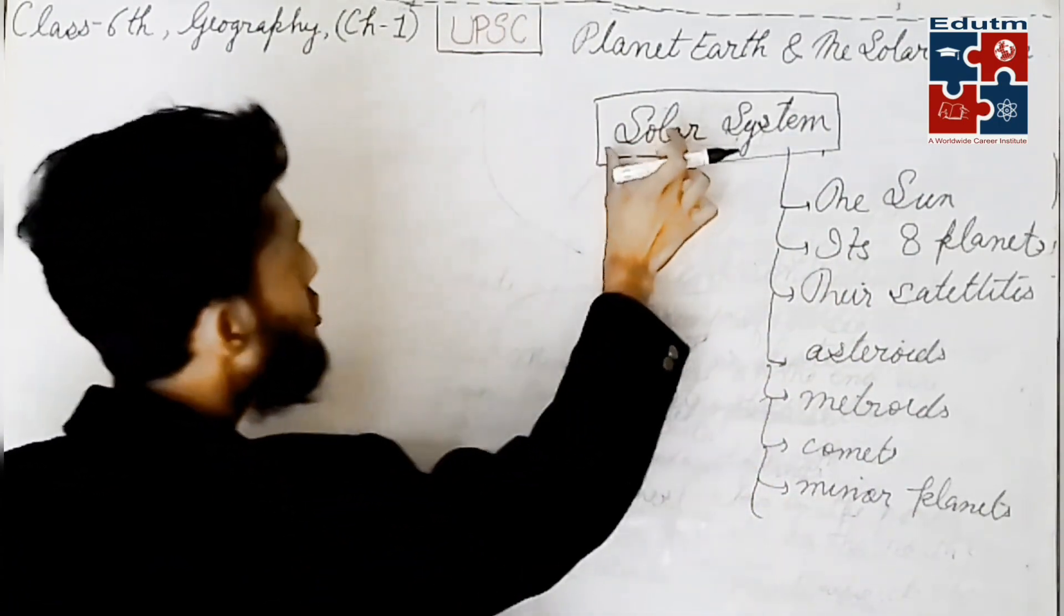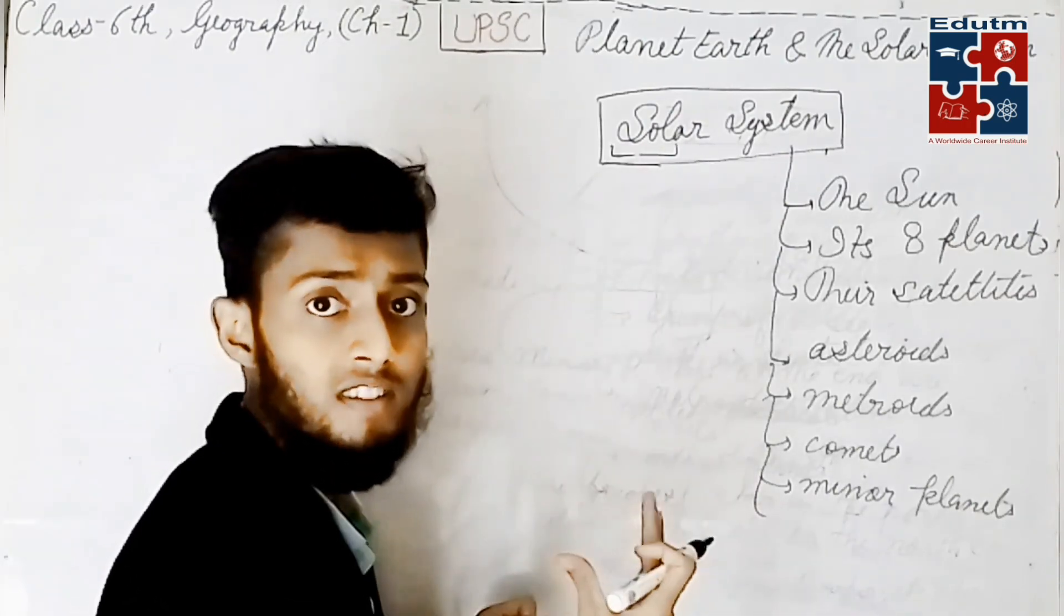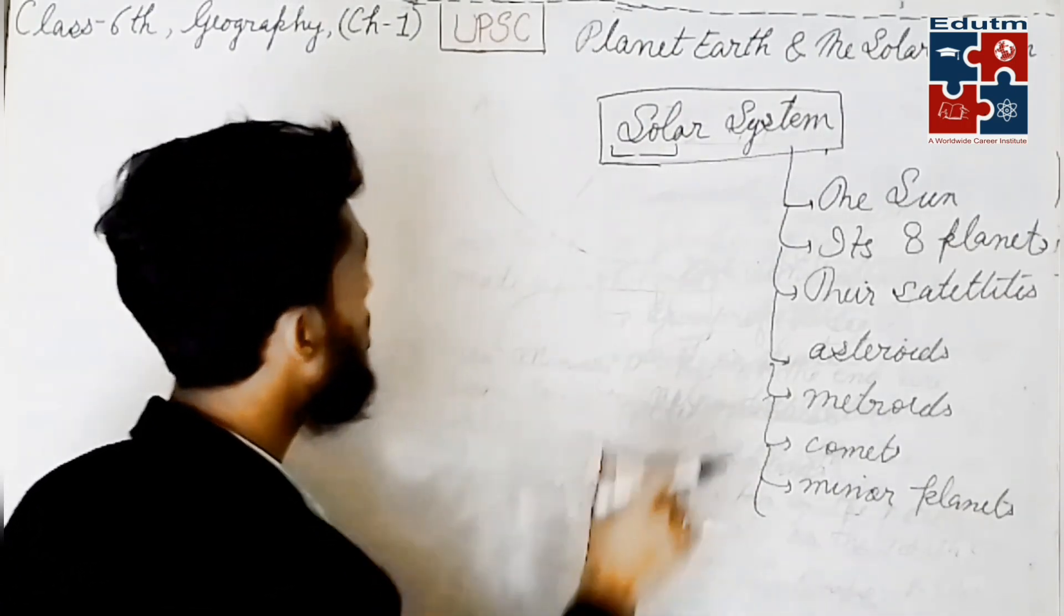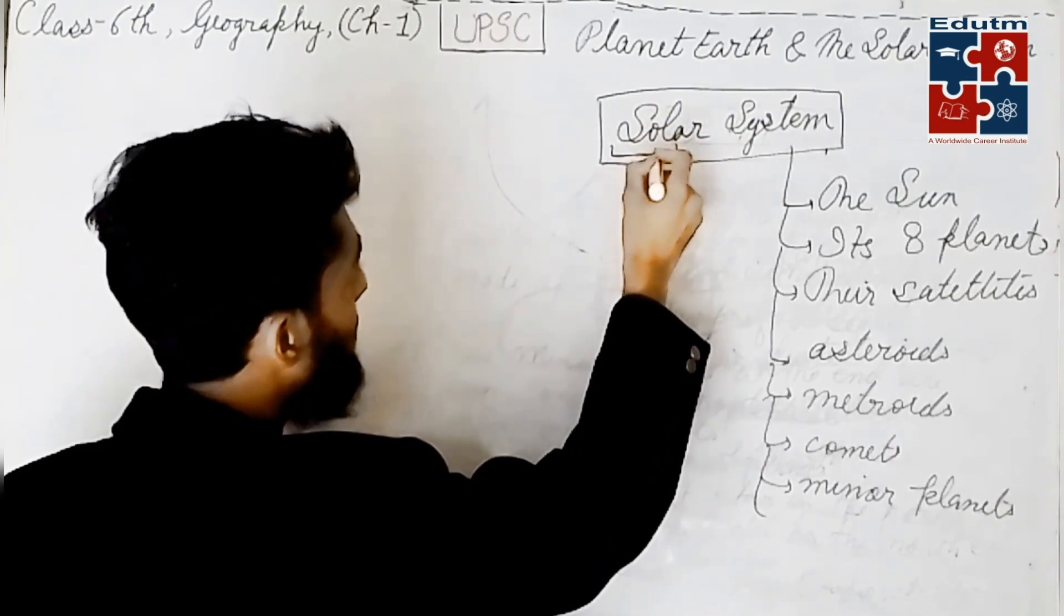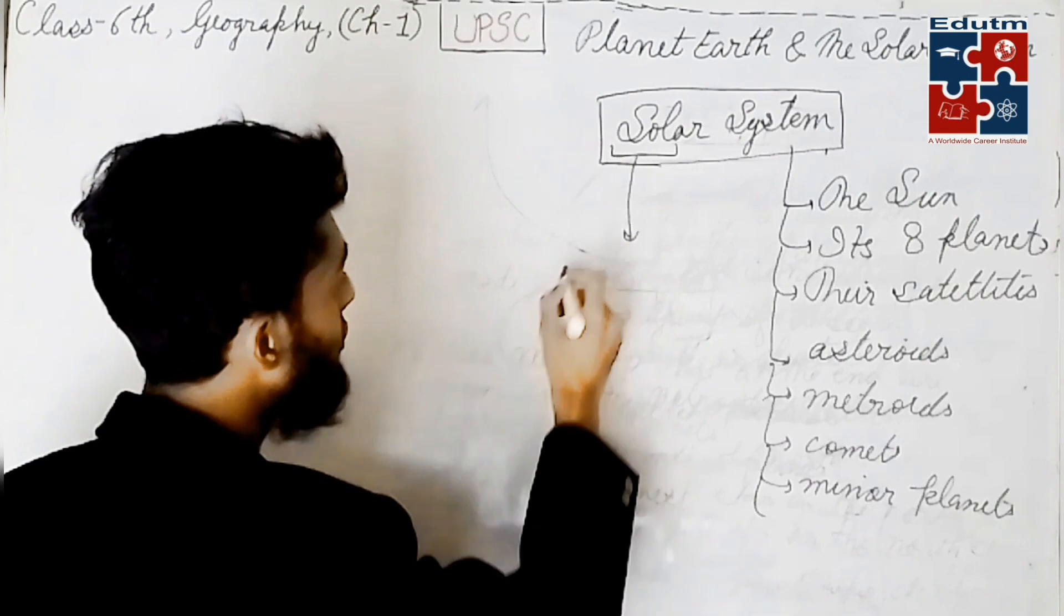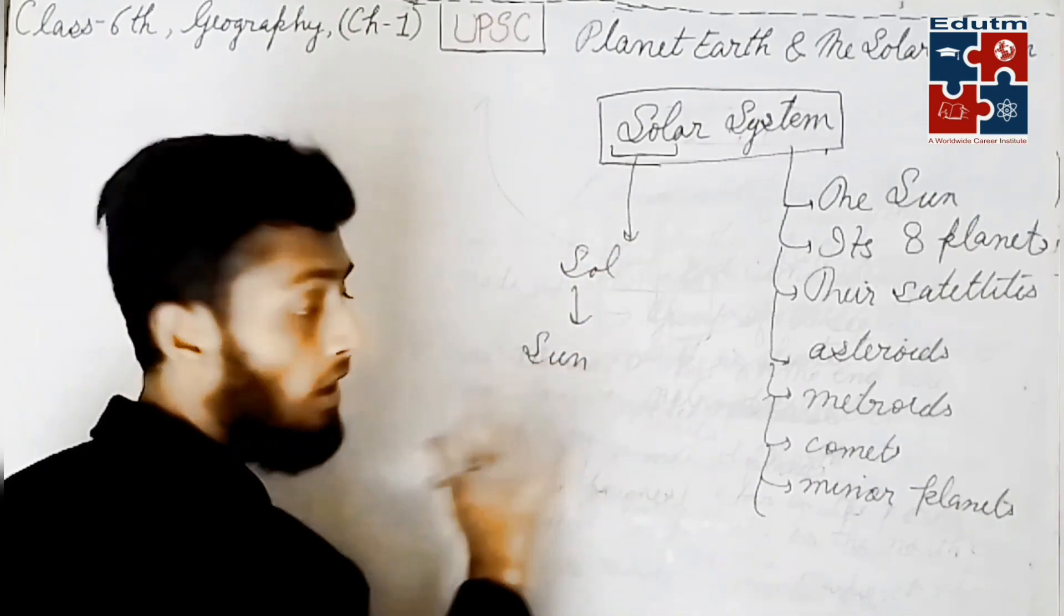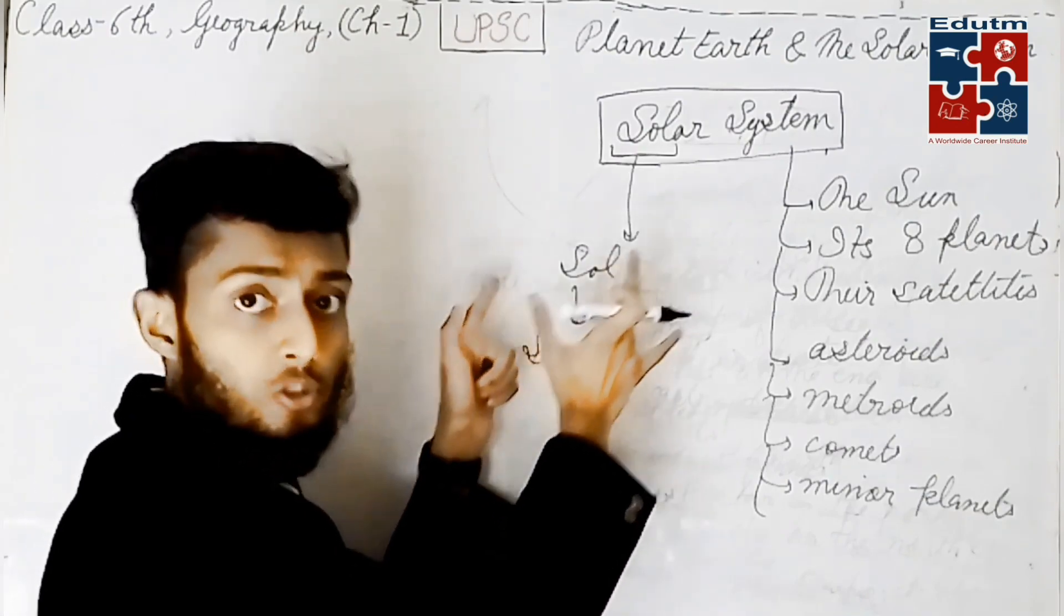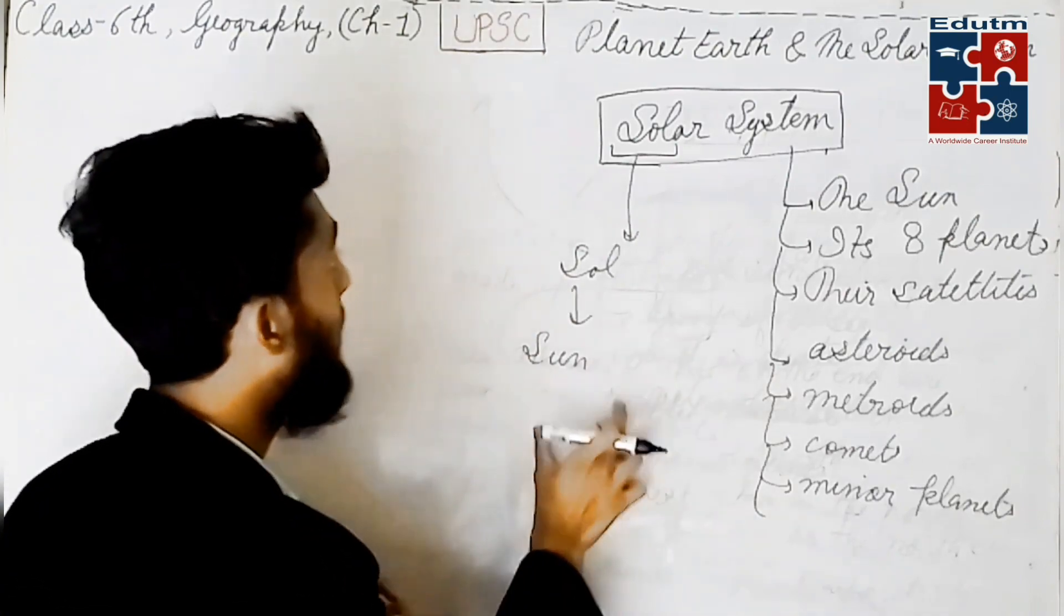Here children, look. Solar system. Why is it called solar? Why is it not called sun system, or universe system, or Milky Way system? Look, actually solar system, here the word solar, this is the word which is derived from the Latin word sol, which means sun.